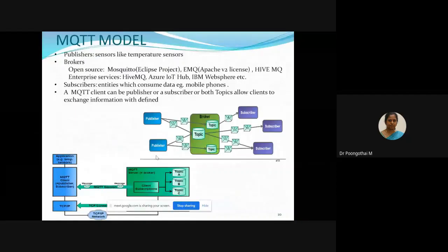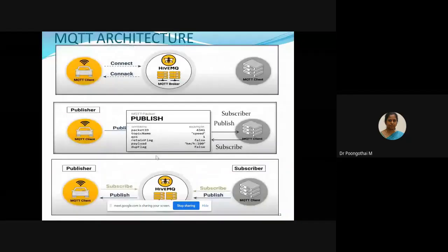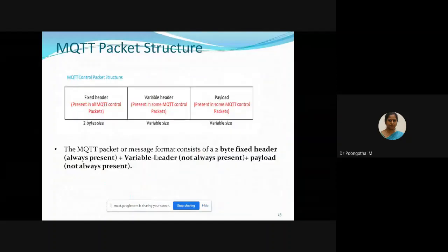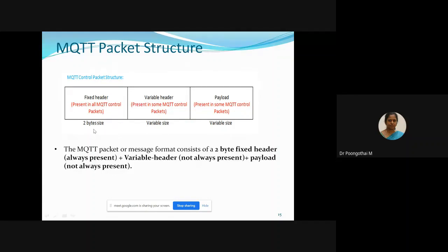Last class we discussed about the MQTT model, architecture, some applications and overview of packet structure. Let me summarize the packet structure of MQTT. An MQTT packet has three fields: fixed header, variable header, and payload. The fixed header is present in all packets and its size is 2 bytes. The variable header and payload are not present in all packets, so their size is variable.